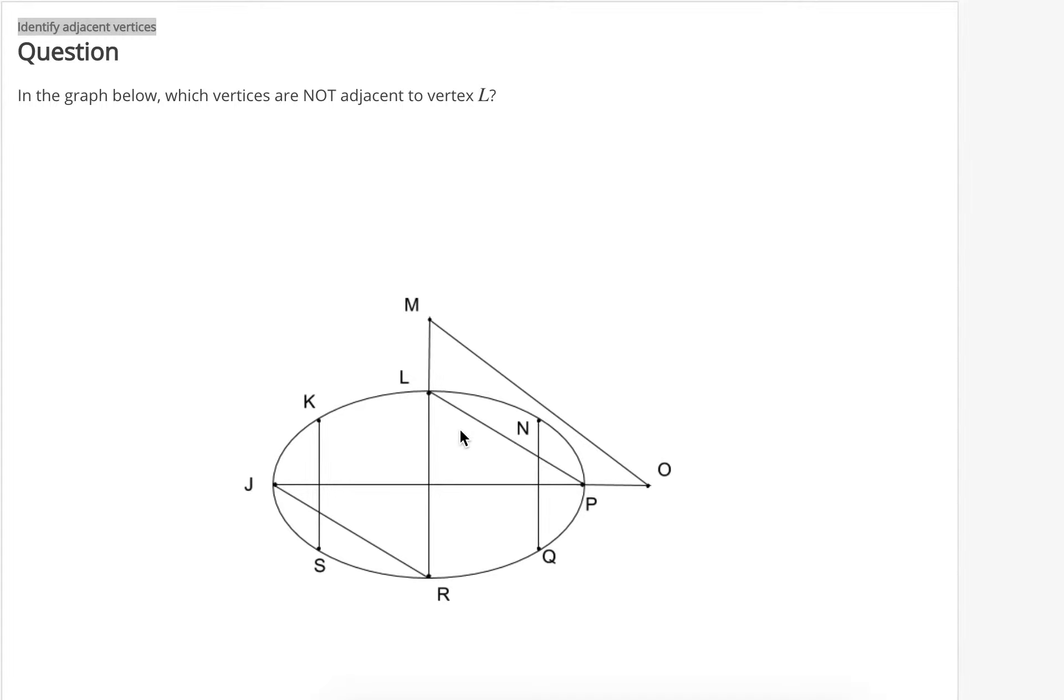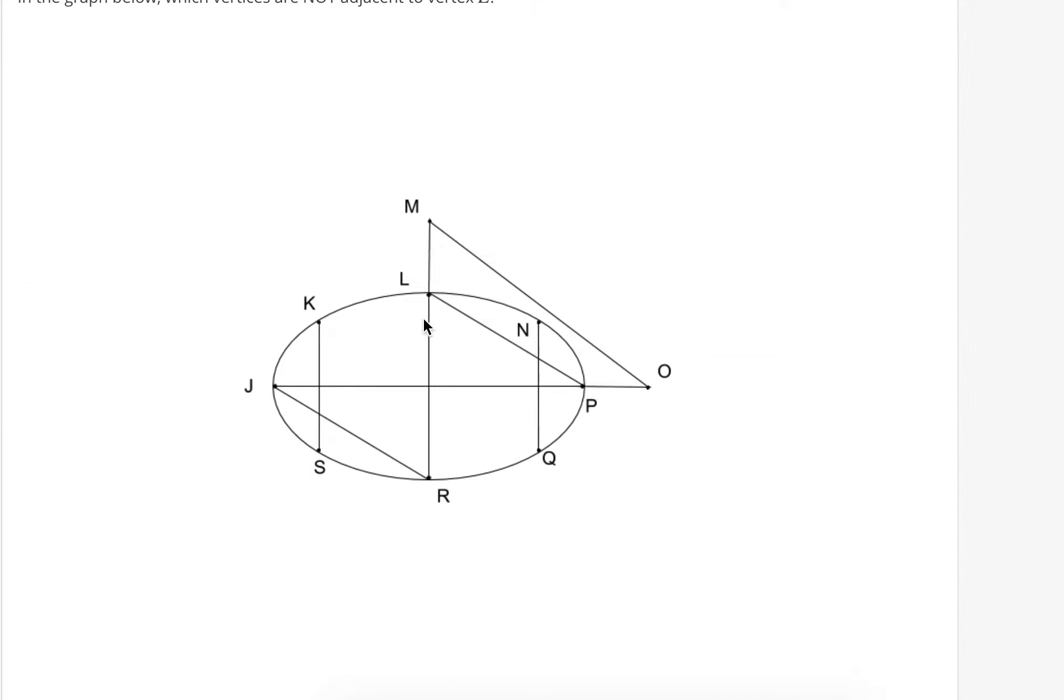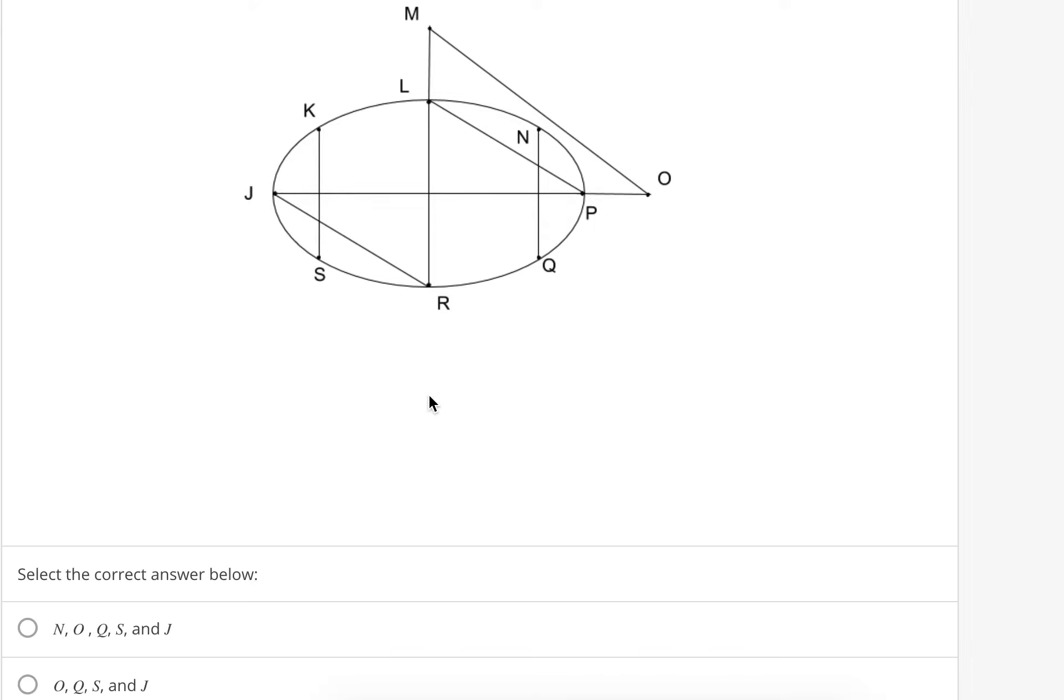And then L and R, they haven't identified this as a vertex, that looks like that's adjacent too because we can connect through just one long edge. I think they would actually consider R not adjacent because they consider this a vertex even though they didn't label it.